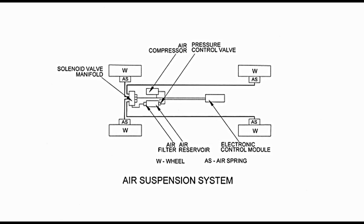An air compressor provides compressed air into the reservoir. A pressure control valve keeps air pressure under control and does not allow it to go beyond the permissible limit. A filter is provided at the outlet of the compressor to filter any impurity in the compressed air. The compressed air then goes to the solenoid valve manifold, which is connected to the electronic control module shown in the middle on the right side. This module operates the solenoid valve as per requirements. Through the solenoid valve manifold, compressed air is supplied to air springs AS attached to wheels W.